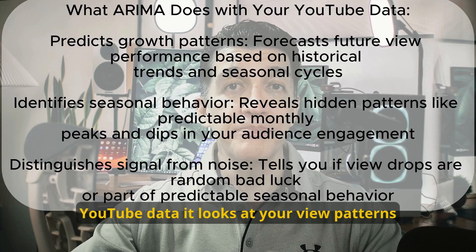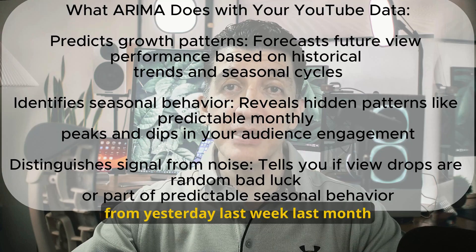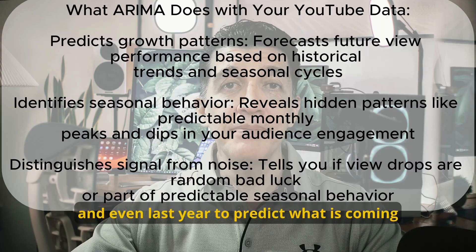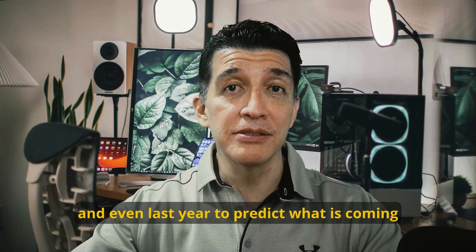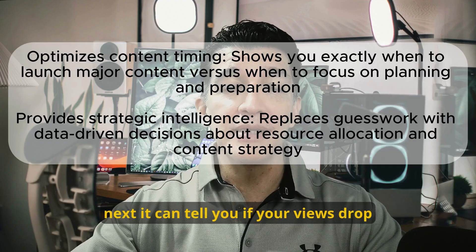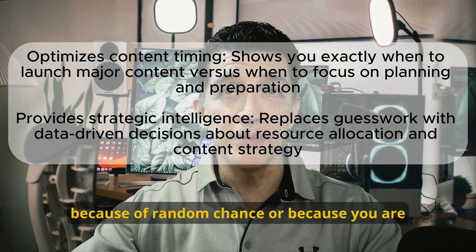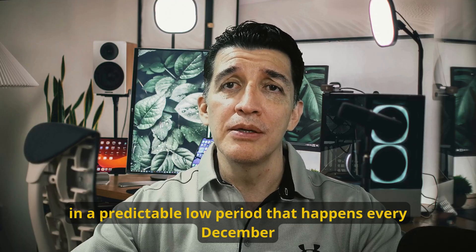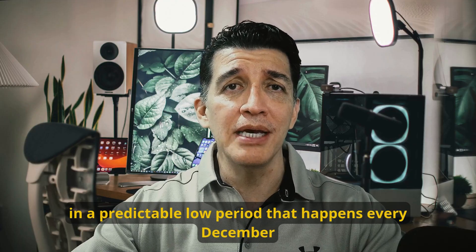And that's exactly what ARIMA does with your YouTube data. It looks at your view patterns from yesterday, last week, last month, and even last year to predict what is coming next. It can tell you if your views dropped because of random chance or because you are in a predictable low period that happens every December.